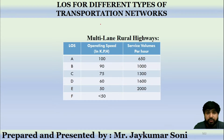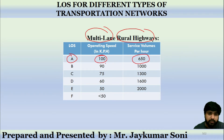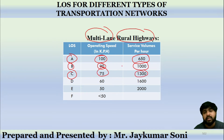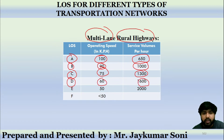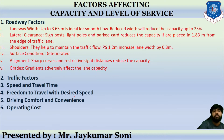For multi-lane rural highways: LOS A has an operating speed of 100 km/h and 650 service volumes per hour; B has 90 km/h and 1000; C has 75 km/h and 1300; D has 60 km/h and 1600; E has 50 km/h and 2000 service volumes per hour; and F has less than 50 km/h. These are the criteria for multi-lane rural highways.